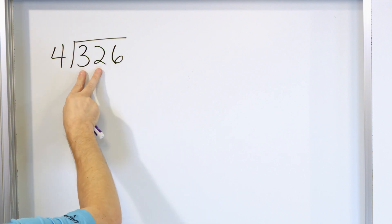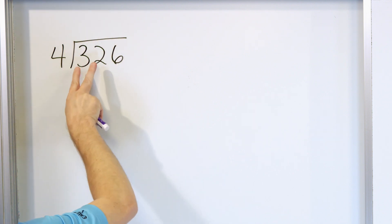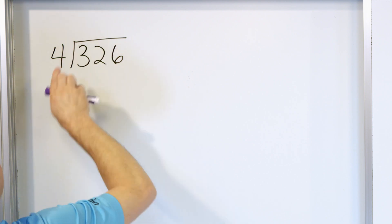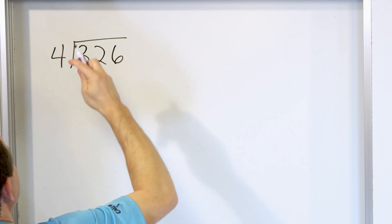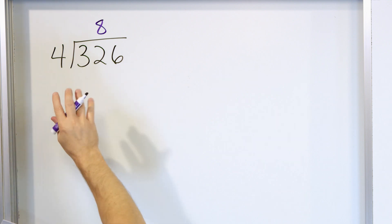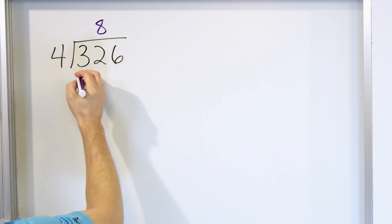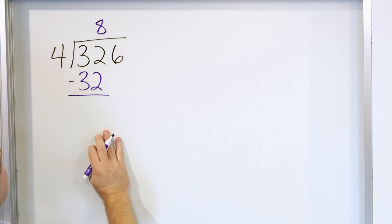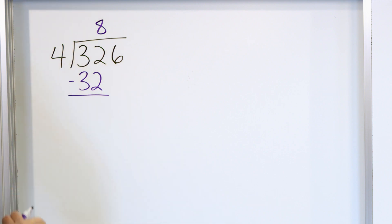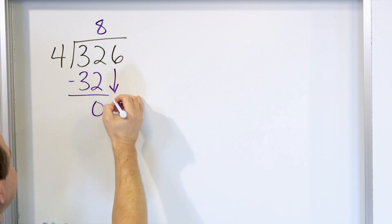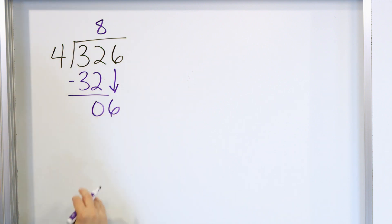So then I consider 32. 4 times 7 is 28, and 4 times 8 is 32. So I'll put the 8 up here — it goes exactly the right amount of times. 8 times 4 is 32, so I write the 32 down here and subtract. 32 minus 32 is 0. Then I grab the next digit, which is a 6.